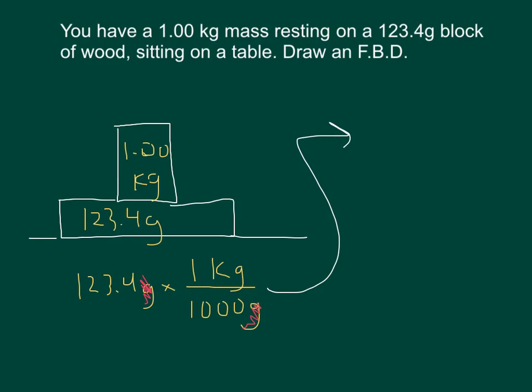And now if we do some multiplication, we've got 123.4 with kilograms on the top, divided by 1,000 on the bottom, which gives us 0.1234 kilograms. So that is 123.4 grams converted into kilograms.